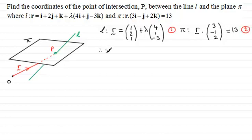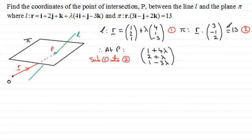Now at the point P, we know that the position vector R must satisfy each equation. So I'm going to substitute equation 1 for R into equation 2. If I was to rewrite this as one column vector, then what we've got is (1 + 4λ, 2 + λ, 1 - 3λ).